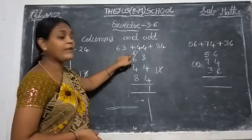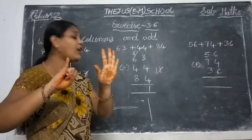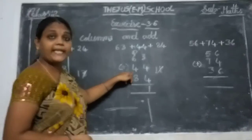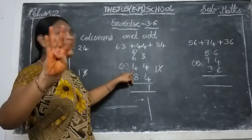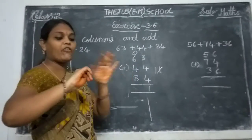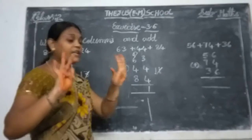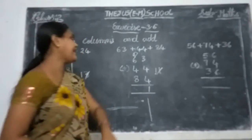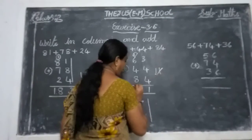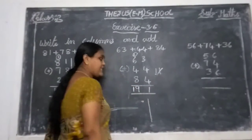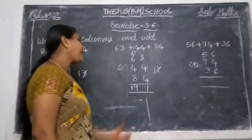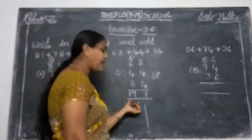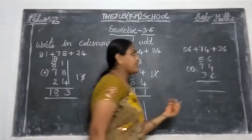Now tens place: keep 1 in your mind, take 6 fingers — count 2, 3, 4, 5, 6, 7. Keep 7, take 4 fingers: count 8, 9, 10, 11. Keep 11, take 8 fingers: count 12, 13, 14, 15, 16, 17, 18, 19. Write 19. There is no next line, so write 19 as the total.